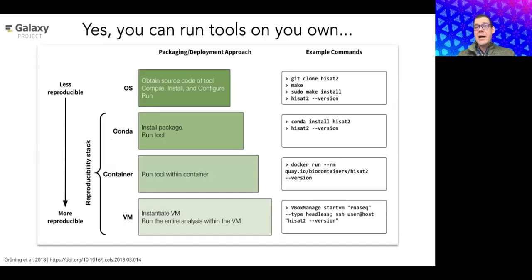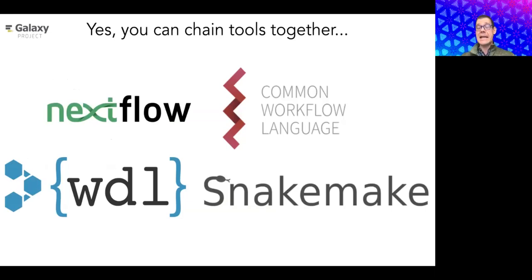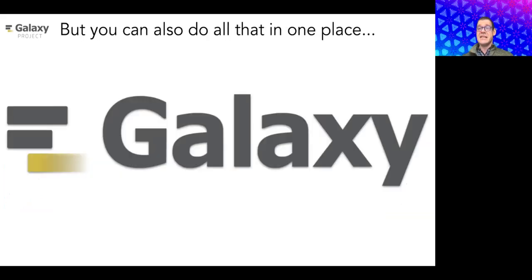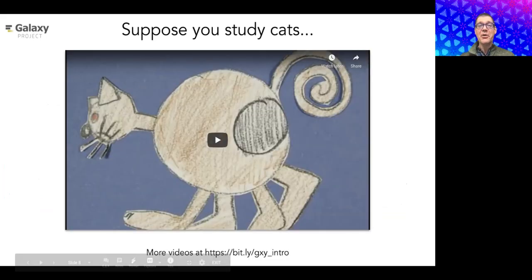You can analyze data in a variety of ways — using command-line tools, chaining tools together, or using workflow languages such as Nextflow, CWL, Snakemake, and others. You also need a compute infrastructure, which can be simple or complicated. Galaxy brings all of this together in one place.